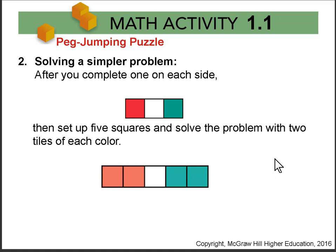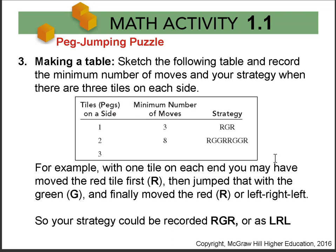What patterns and moves do you notice? In question three we're going to make a table as our problem-solving strategy — just put the moves in your table. We have the moves marked as moving red, then green, then red, but you can also think of this as moving left, then right, then left. You could mark it as red-green-red or left-right-left; whatever way works for you.